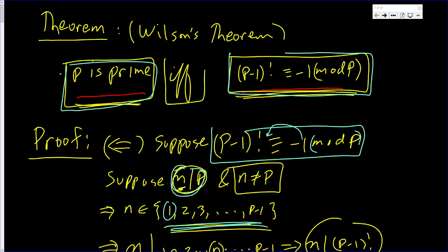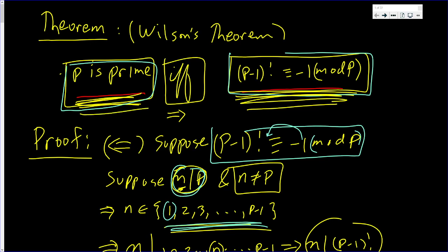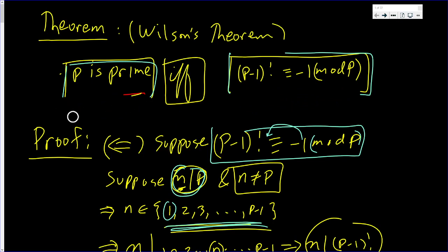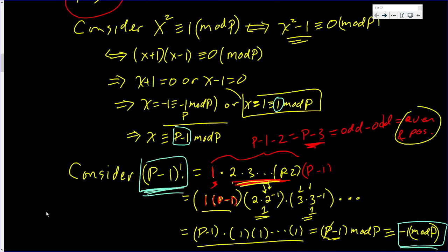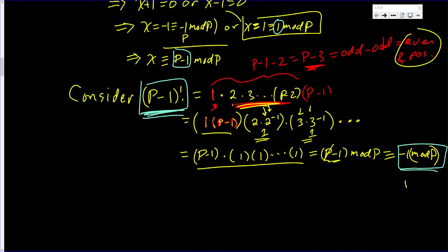Altogether, we proved something a little bit more rigorous than Wilson's Theorem: we proved if and only if. Normally Wilson's Theorem just goes one way — p is prime implies (p-1)! ≡ -1 mod p. But we also proved the converse. So it's if and only if — a little bit more than what Wilson said. If you like seeing mathematical proofs like this, subscribe to my channel. Click the like button, and most of all, watch and learn.